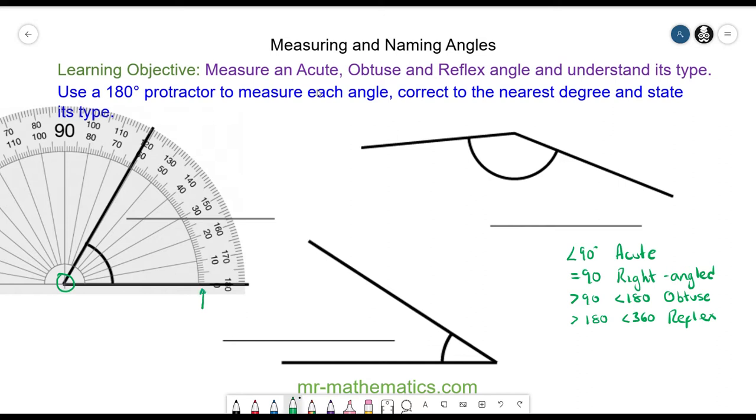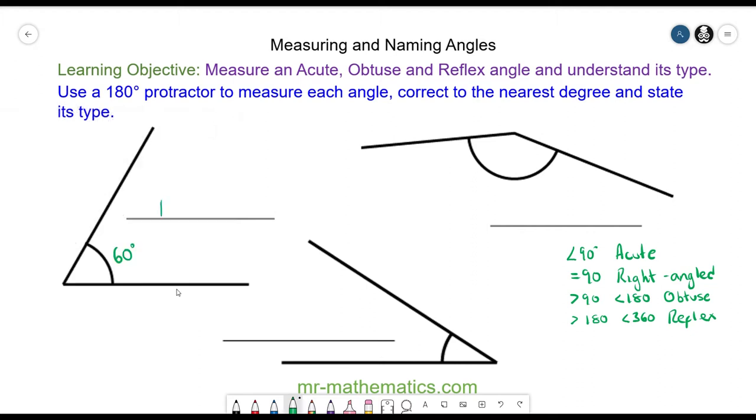We are going to go from here to the other line in an anti-clockwise direction, so you can see we land at 60 degrees. Be careful not to use 120 because this is starting at zero on the top scale. So this angle is 60 degrees, so we call it an acute angle.